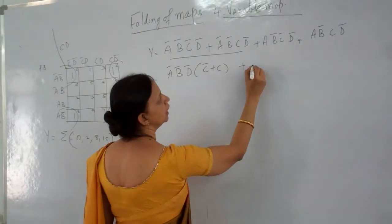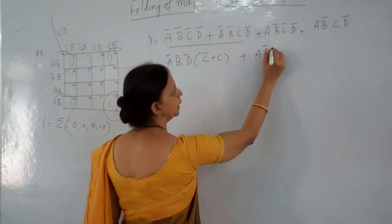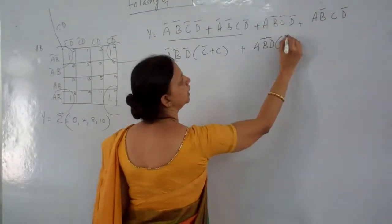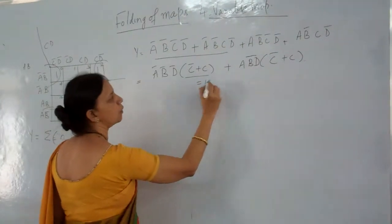From these two what is common? A, B bar, A, C bar, D bar. So what do you get here? C bar plus C. C bar plus C is 1.